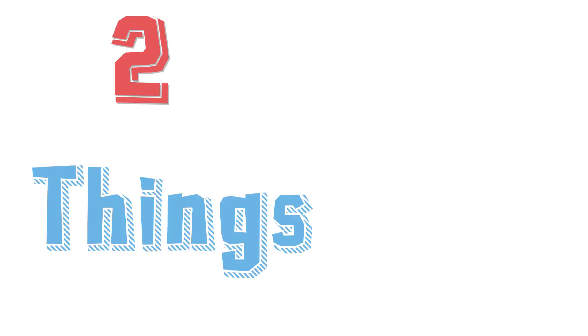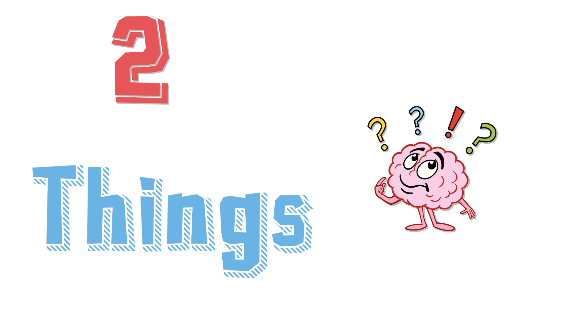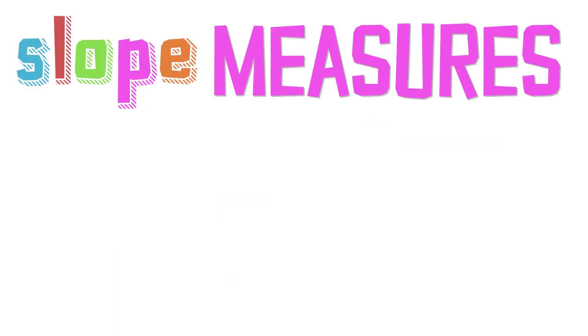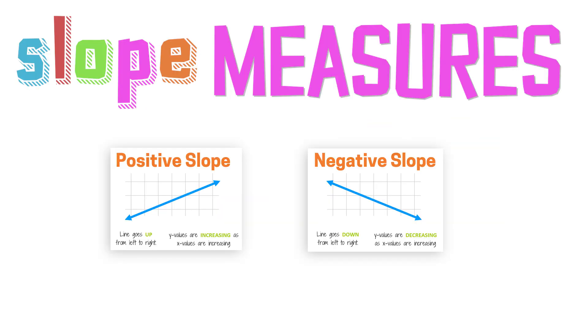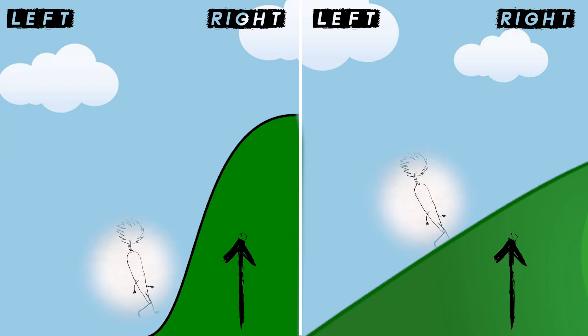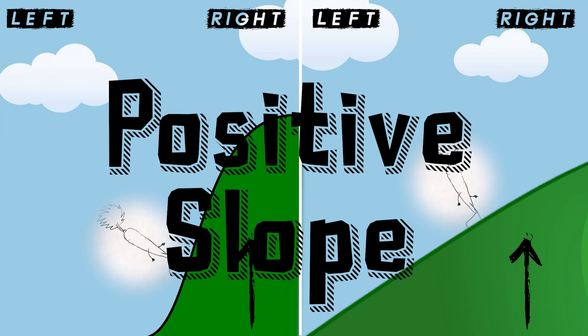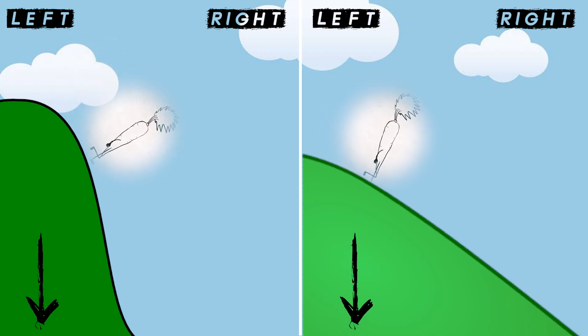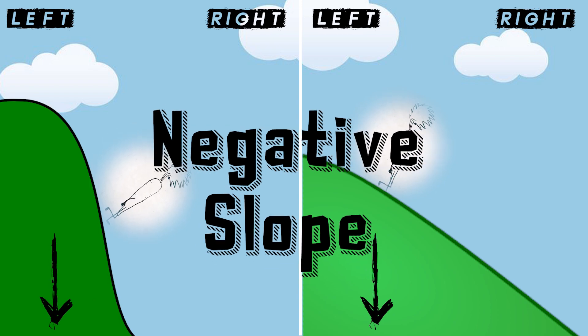Remember two things that we have to keep in mind when understanding slope. Slope measures the direction of the line — whether you're going up the hill, which is positive, or going down the hill, which is negative.